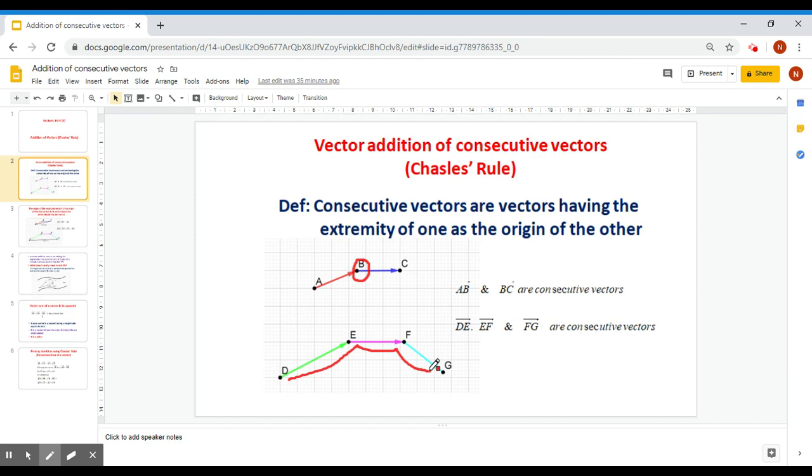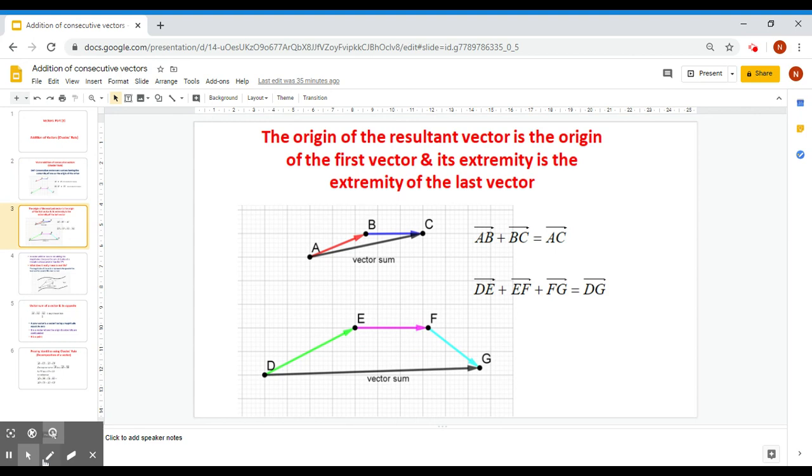Now to add consecutive vectors, we do the following. AB plus BC will give me AC. Here the extremity is B. Here the origin is B. So the resulting vector will be composed of the origin of the first and the extremity of the last. The resulting vector in this case is AC.